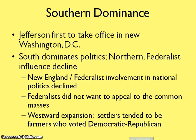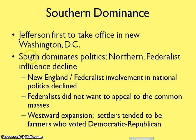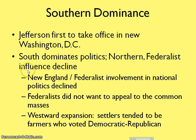This period also marks a point where Southern states have more of a say in office. The capital of the United States moves from New York City to Washington, D.C., and Jefferson is the first president to take office there. For the next few presidencies, we only see Southern elected people becoming president. The Northern states were the Federalists, while the Southern states were the Democratic-Republicans. So New England Federalists' involvement in national politics declined.